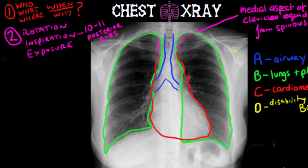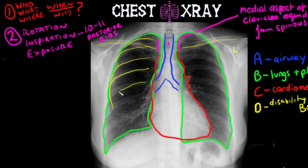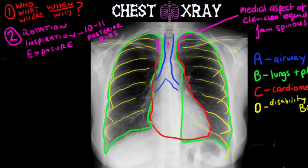Staying true to the ABCDE mnemonic, D stands for disability, which incorporates bones. You are going to try to trace the clavicles, look at the spinous processes in the midline, and then work on the ribs — starting at the top and working your way down, beginning at the posterior aspect and working forward, looking for fractures or any displacement. Any fracture or displacement could imply damage to underlying structures.